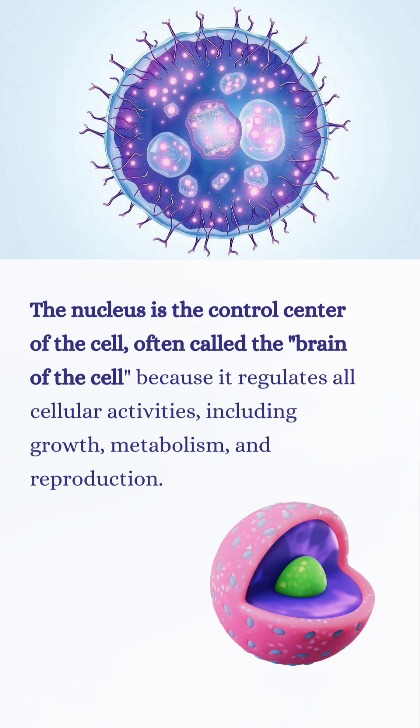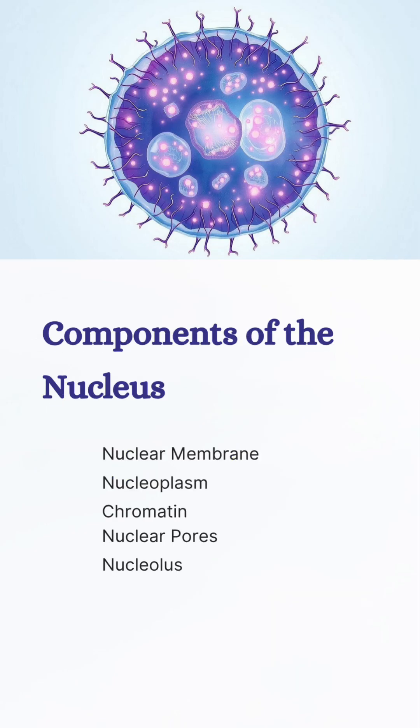The membrane-bound nucleus has five main components: nuclear membrane, nucleoblast, chromatin, nucleolus, and nuclear pores.